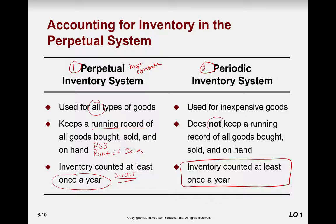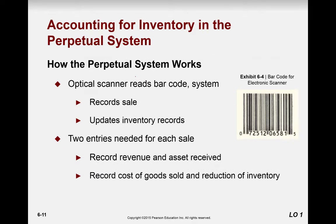For a periodic system, you don't keep a running total — the only way you know what's on hand is by counting it. Inventory must be counted at least once a year. In the perpetual system, every time a UPC gets scanned you record the sale: debit cash or accounts receivable and credit sales revenue for quantity times the sales price. Then to update inventory records, you debit cost of goods sold and credit inventory for quantity times cost. Two entries are needed.